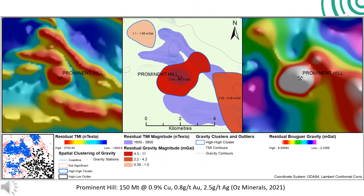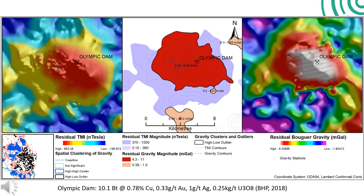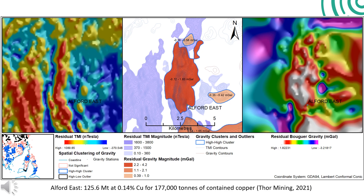These last few slides revisit some of the known IOCG deposits in the context of where they sit in terms of clustering. The Prominent Hill deposit and mine sits near the perimeter of the high clusters at the margin of the high-grade metamorphic rocks and low-metamorphic-grade metasedimentary rocks, with a residual gravity anomaly of around 4 milligals. The Olympic Dam IOCG is centrally located within the region of high-magnitude gravity outliers and has a residual gravity anomaly of around 9 milligals, one of the largest anomalies in the region. The Alford East occurrence is an example of an IOCG occurrence in the southern region, with textures indicative of shear zone-hosted iron.